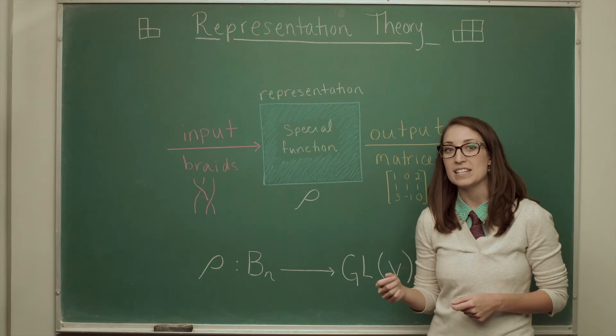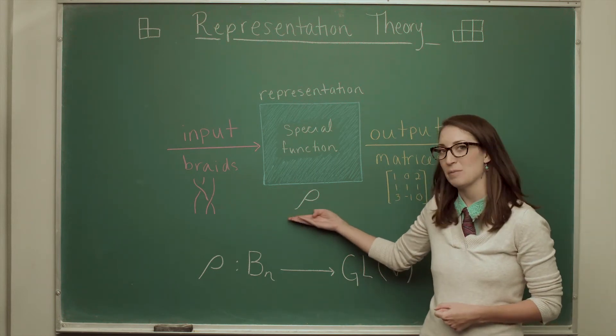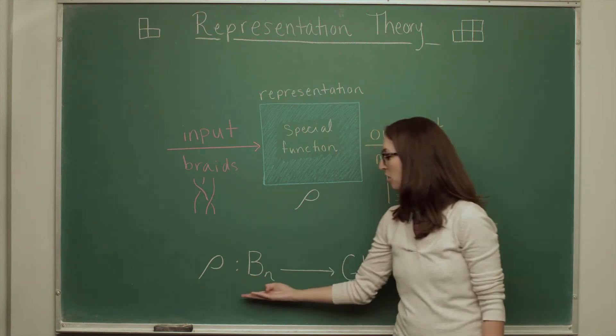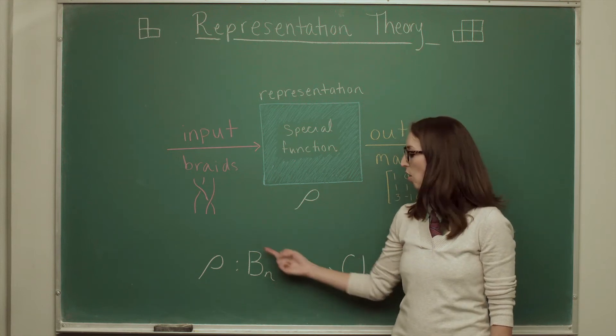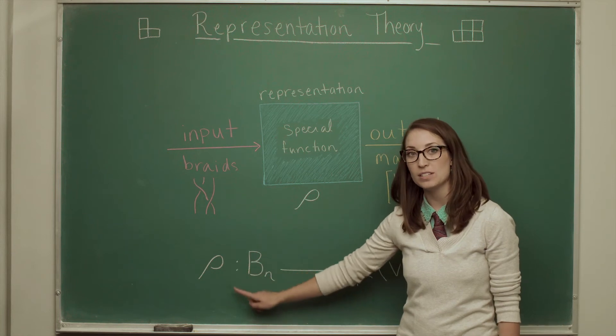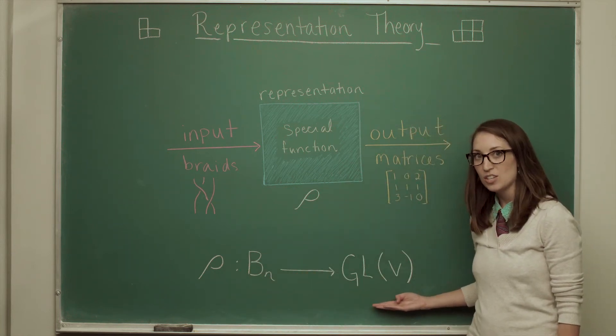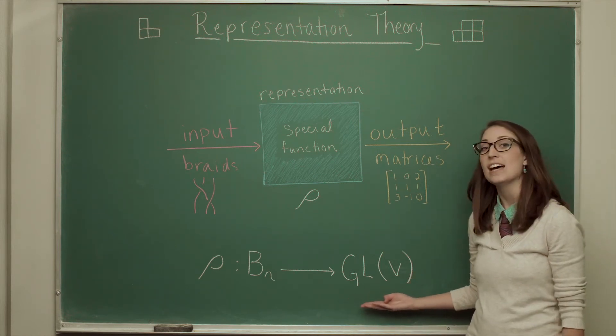The way that mathematicians write down a representation is we usually give the function, the representation, a name. So here I've called it rho. And now if you recall, Bn meant the braid group with all the braids with n strands. So this is denoting the input of my function. And I'm outputting matrices. So mathematicians call the matrices, or the collection of matrices, GLV.